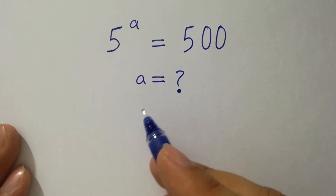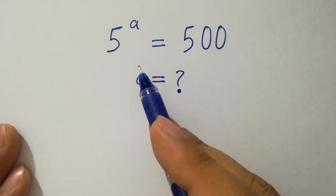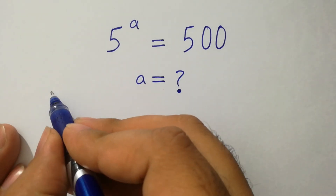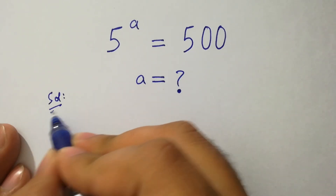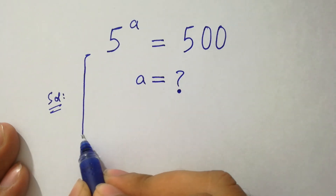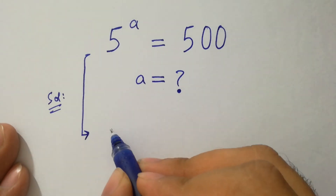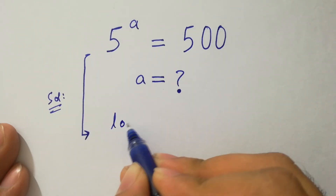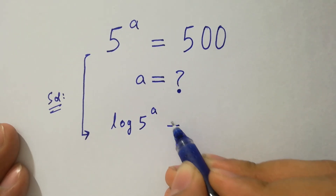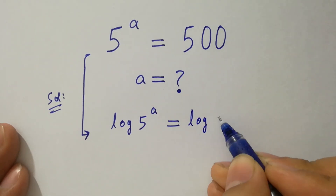Hello friends, find the value of a if 5 to the power a equals 500. Let's have a solution. To solve this problem, first of all take log on both sides: log 5 to the power a equals log 500.